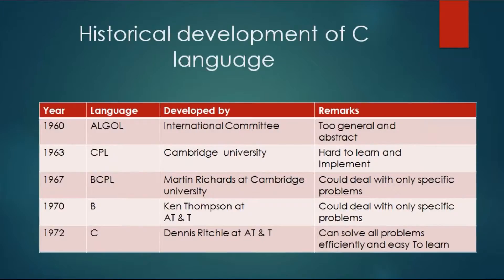When we talk about historical development of C language, initially we had languages like assembly language and machine language, which was in zeros and ones. So it was very efficient but difficult to work in zeros and ones. So development, debugging, and maintenance was very difficult. There was a need for a language that would give efficiency as well as ease of programming.